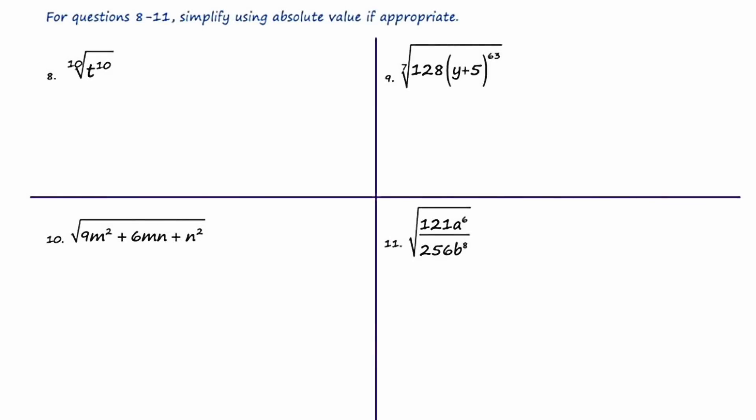We're on our last slide with four more questions. For number eight, simplify the 10th root of T to the 10th. What monomial times itself 10 times is T to the 10th? The answer is T. However, the index is even, the exponent is even, and the answer is to the power of one which is odd. So I need absolute value — the answer is absolute value of T.